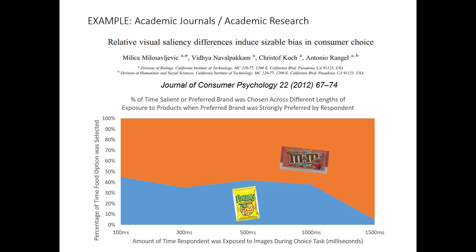What we see here is one figure representing the results of one of the experiments the authors reported in this article. In their study, they asked people to make a choice between two different products. One product was something the consumer strongly preferred — for example, peanut butter M&Ms. The other product was one the consumer did not prefer, but it was made visually salient — highly visible, something you'd quickly notice at a glance. To suggest visual saliency, the Funyuns are brightened while the M&Ms are a little more darkened.